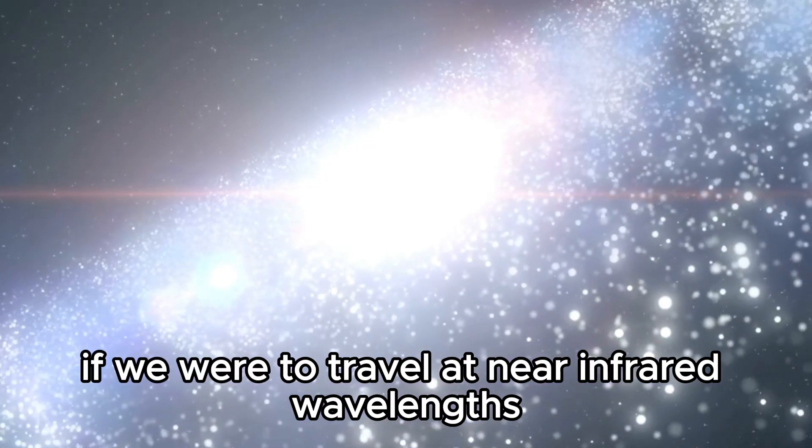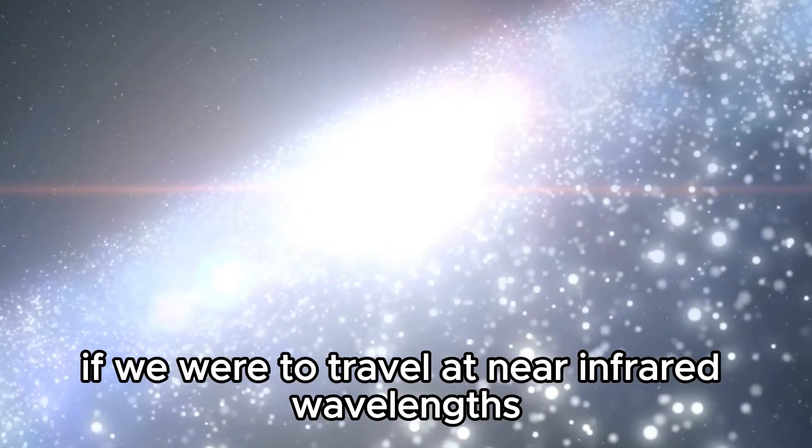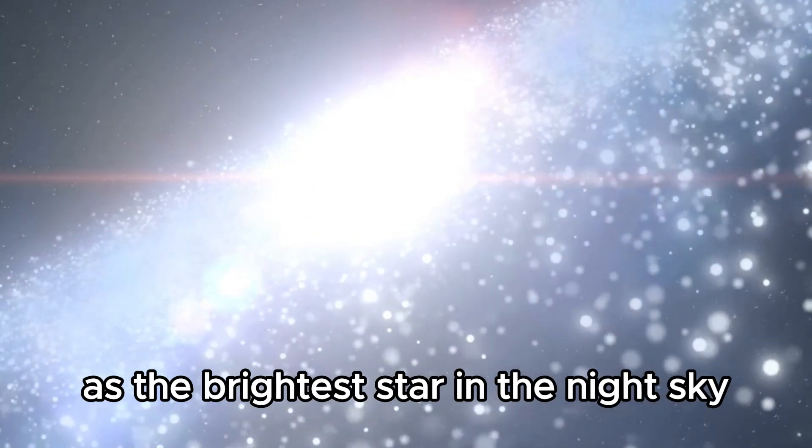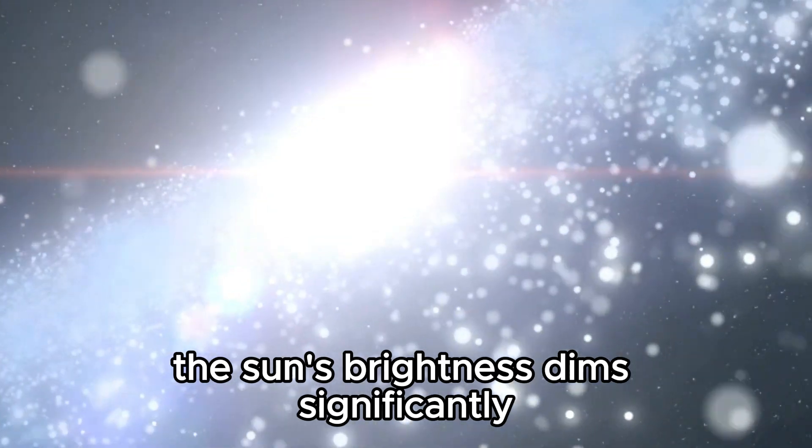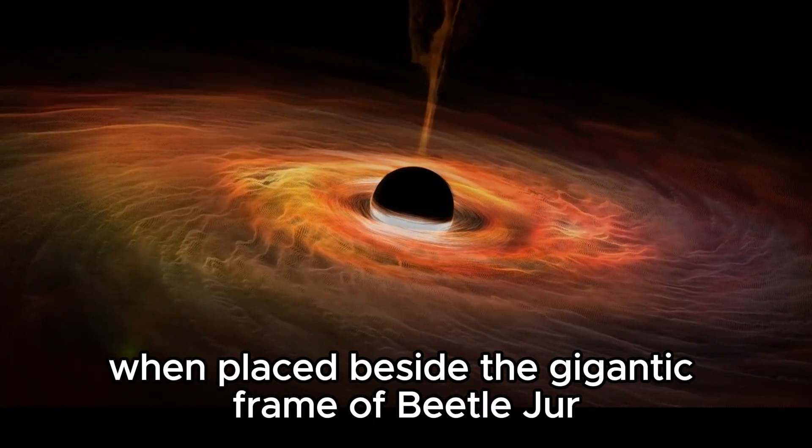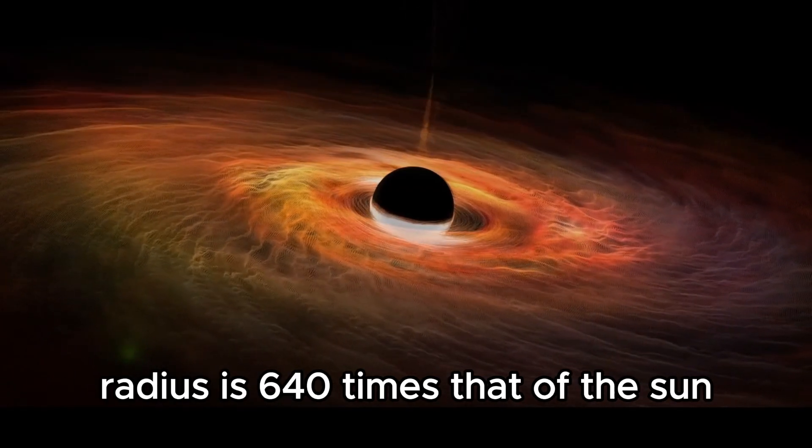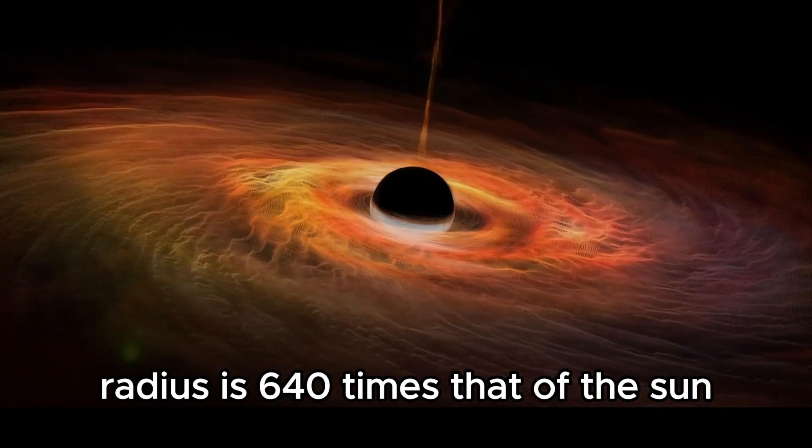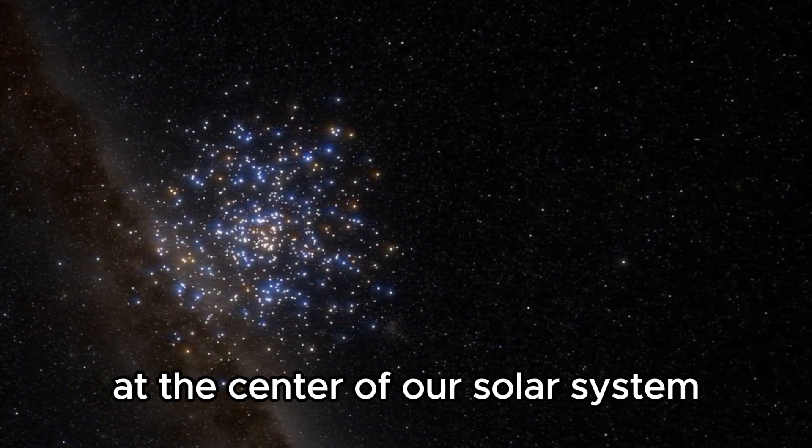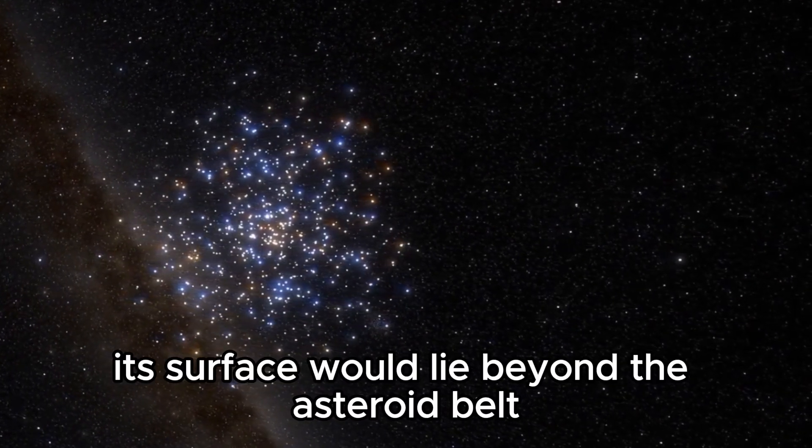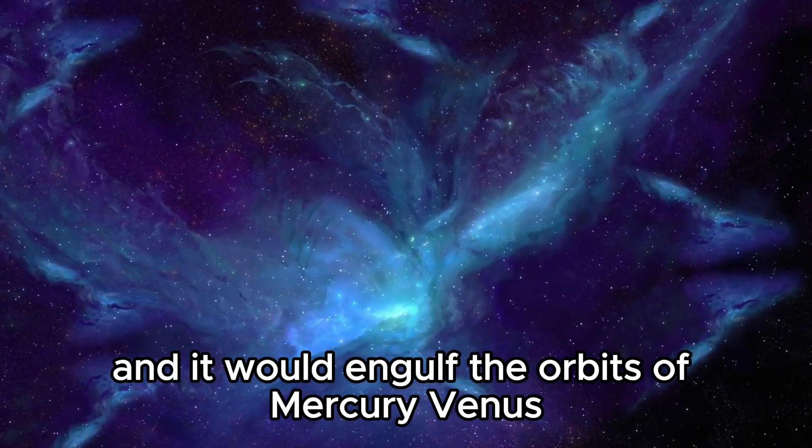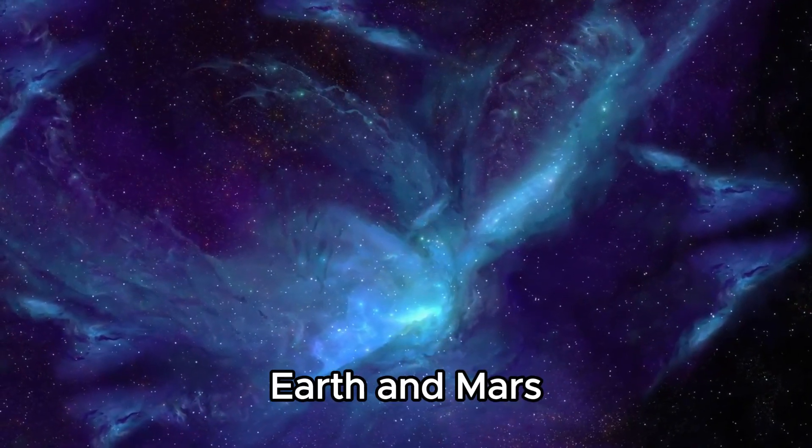However, if we were to travel at near-infrared wavelengths, no other star would take Betelgeuse's crown as the brightest star in the night sky. The sun's brightness dims significantly when placed beside the gigantic frame of Betelgeuse. The red supergiant star's radius is 640 times that of the sun. If by some magical wand we could place Betelgeuse at the center of our solar system, its surface would lie beyond the asteroid belt, and it would engulf the orbits of Mercury, Venus, Earth, and Mars.